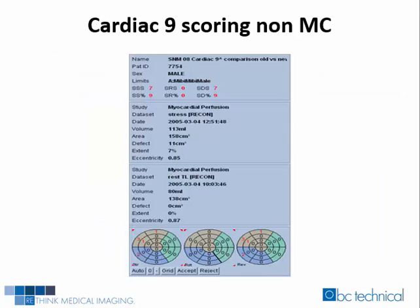Here is Cardiac IX's non-motion corrected study quantitative scoring results. The summed stress score was 7, the summed rest score was 7, and the summed difference score was 7.